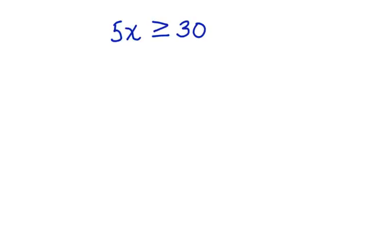To do that, we're going to use the inverse of whatever operation is present in the inequality. This inequality already has multiplication in it, so we're going to use the inverse and divide both sides by 5. We're going to get the x alone.